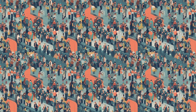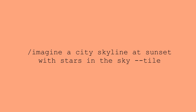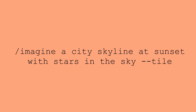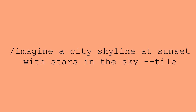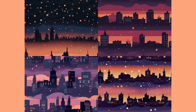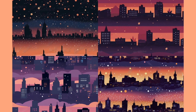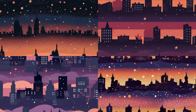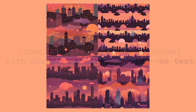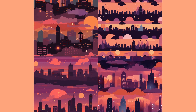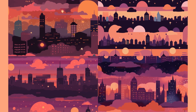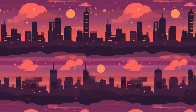For the last prompt I used /imagine 'a city skyline at sunset with stars in the sky' --tile. The initial output had some weird text and watermark stuff on top, so I reran the prompt this time with --no text at the end, which got rid of all that text. You can see our four results that Midjourney gave us — these all look really good. I went ahead and upscaled my favorite and here is the seamless pattern.